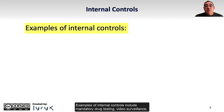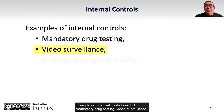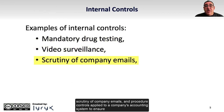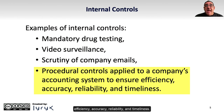Examples of internal controls include mandatory drug testing, video surveillance, scrutiny of company emails, and procedure controls applied to a company's accounting system to ensure efficiency, accuracy, reliability, and timeliness.